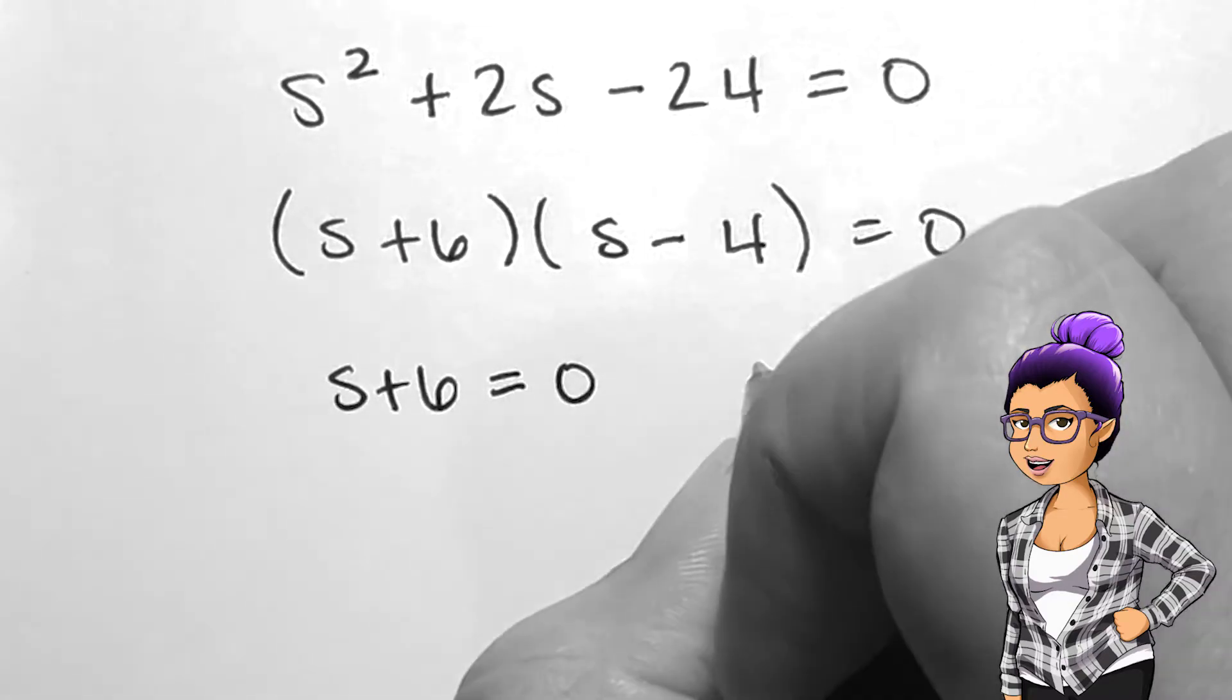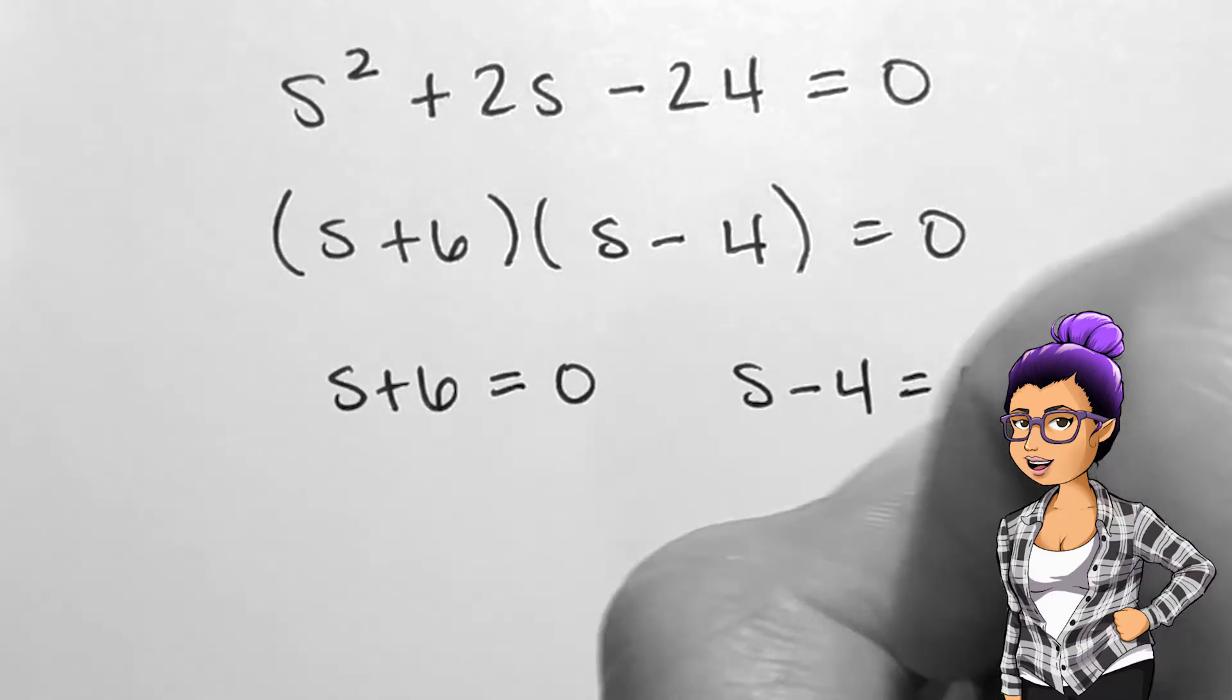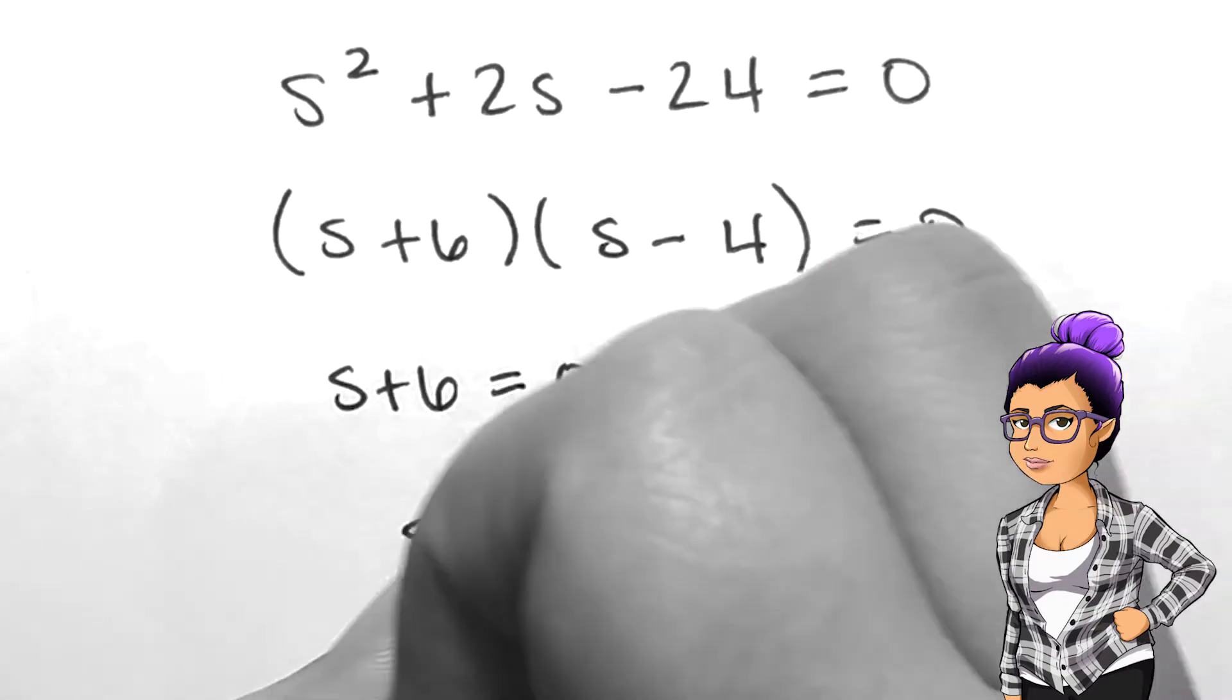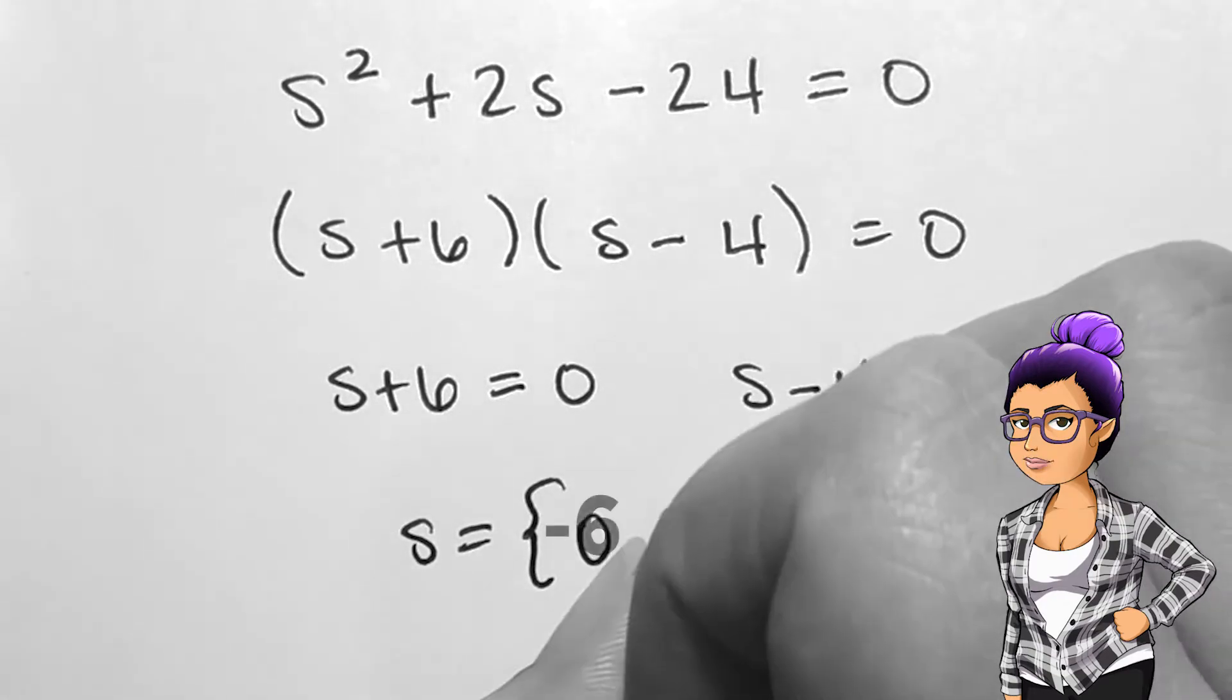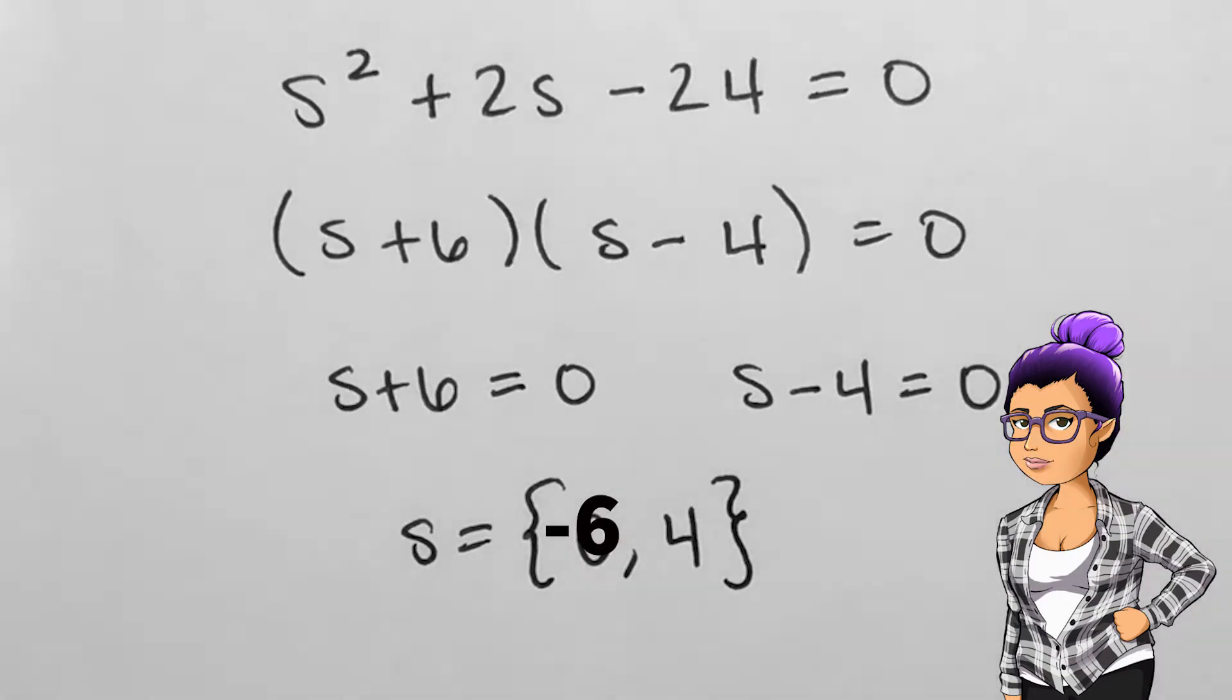Using the zero product rule, I get that s plus 6 equals zero and separately, s minus 4 equals zero. Our final answer should be that s equals both negative 6 and 4.